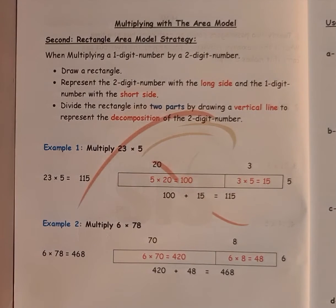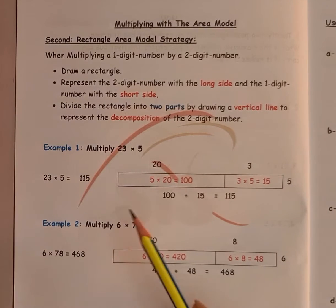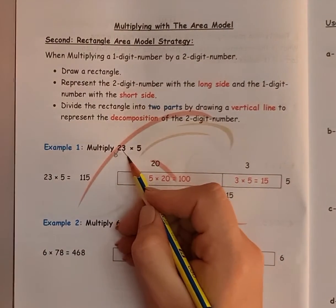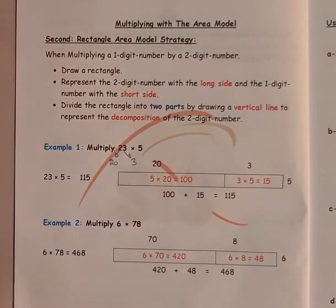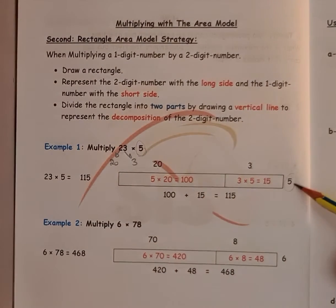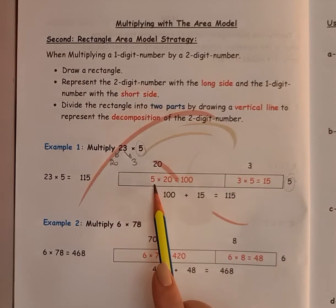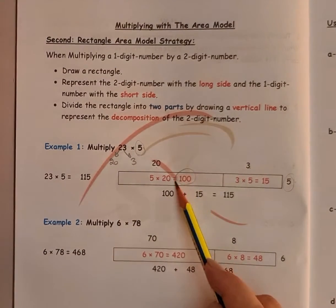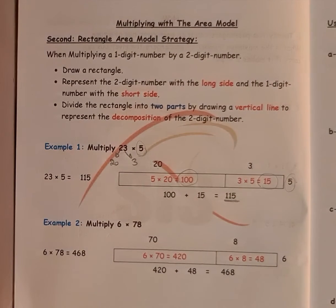Page 4 in Unit 7: the other way for solving multiplying a two-digit number by a one-digit number is called the rectangle area model. I have a rectangle, and I'm going to represent the two digits. For 23, it will be 20 and 3. I represent 20 here and 3 here, multiplying by 5. So 5 times 20 equals 100, and 5 times 3 equals 15. Add them together: the answer is 115.